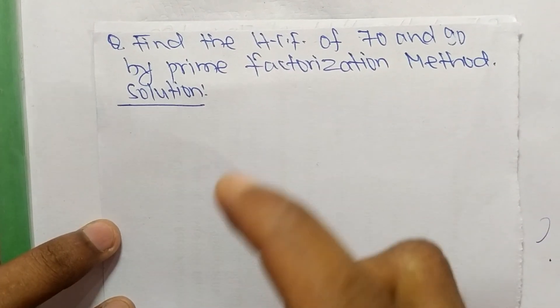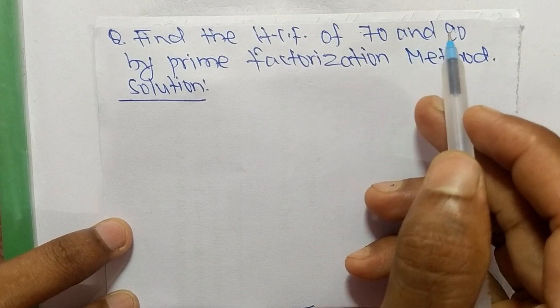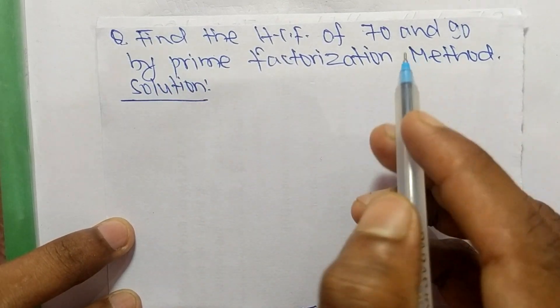So today in this video we shall learn to find the HCF of 70 and 90 by prime factorization method.